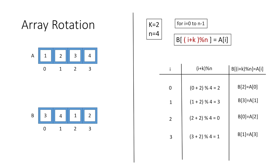Using the formula (i + k) % n, we have successfully rotated our array by k positions to the right. The i+k part shifts every element k positions to the right, and the modulo n ensures that when we reach the end of the array we start placing elements from the beginning. For example, when i+k equals 4, index 4 is out of bounds, so 4 % 4 = 0 brings us back to the start. This works for any value of k.